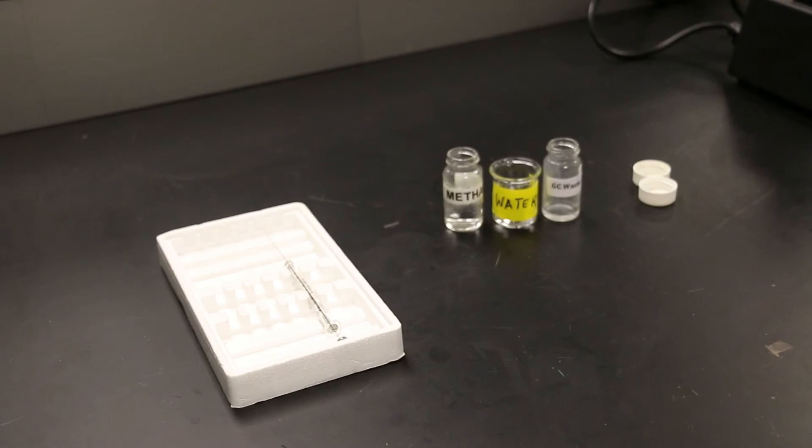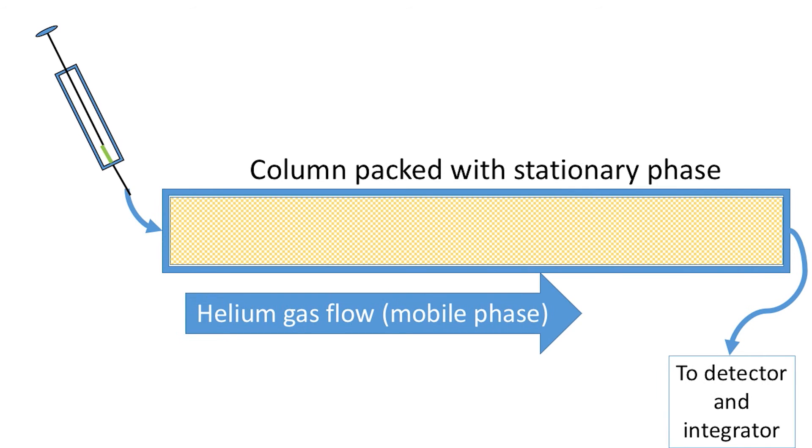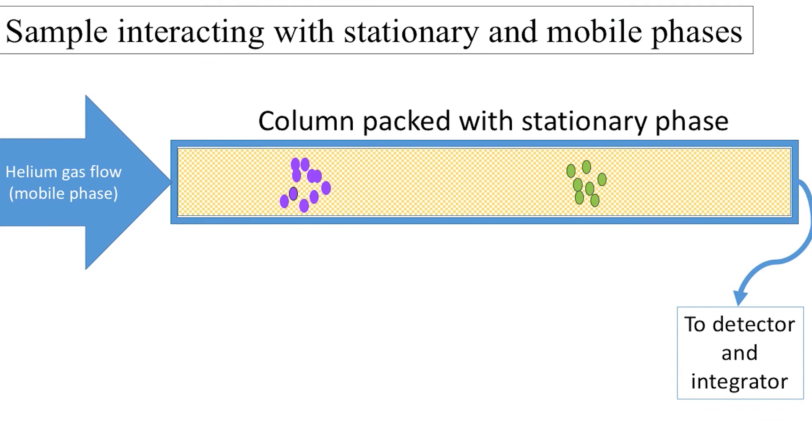As soon as start on the integrator is pressed, the integrator begins recording time and amplitude of the detector output from the GC. In GC, the lower boiling compounds will vaporize first and move into the gas mobile phase easily.